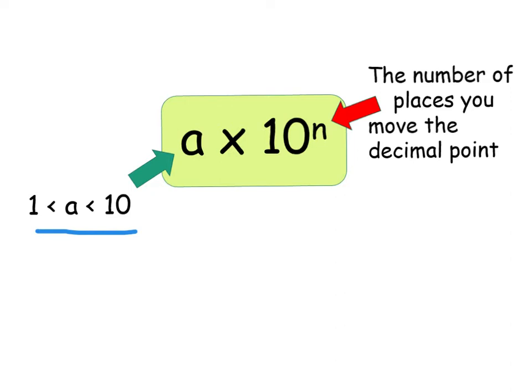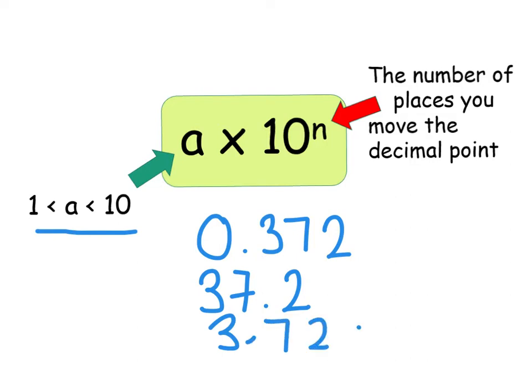Today, we're having to move the decimal point to the right. This bit in front of the number, the bit in front of the times 10, again, remember, should always be between 1 and 10. So you can't have 0.37, you can't have 37.2, but you could have maybe 3.72. That would be the appropriate one to have there. It has to be between 1 and 10.